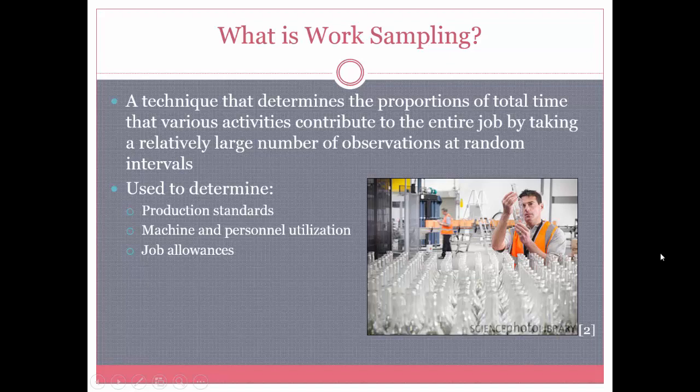Work sampling is a technique that determines the proportions of total time that various activities contribute to the entire job by taking a large number of observations. It is an alternative to a time study. The three main things work sampling is used to determine are production standards, machine and personnel utilization, and job allowances.